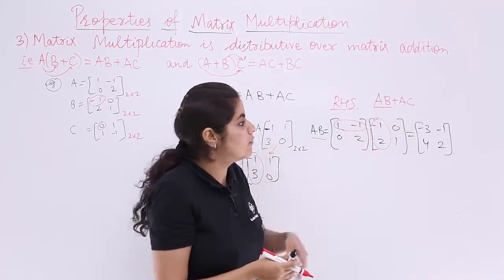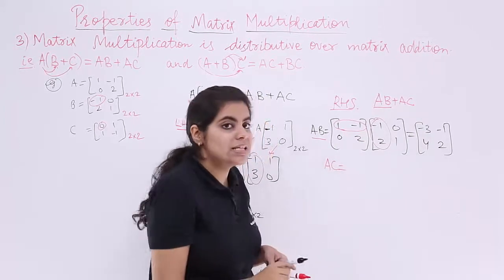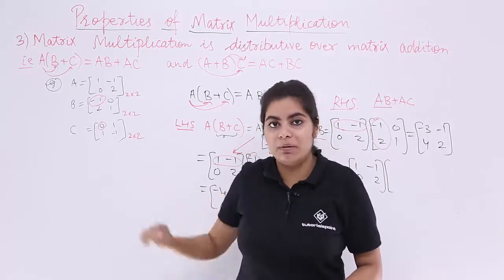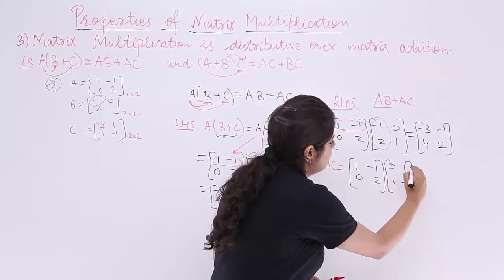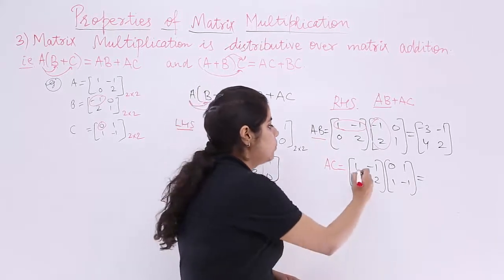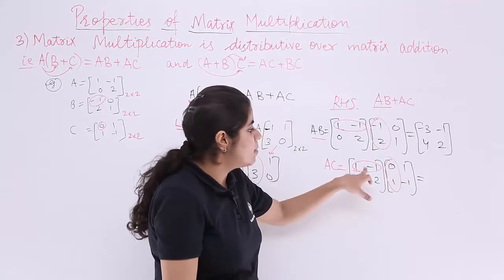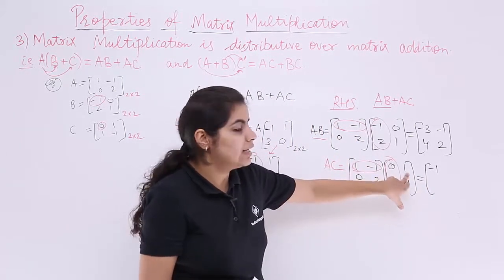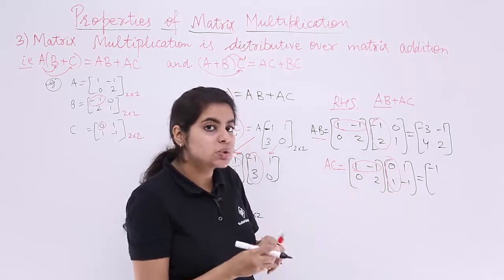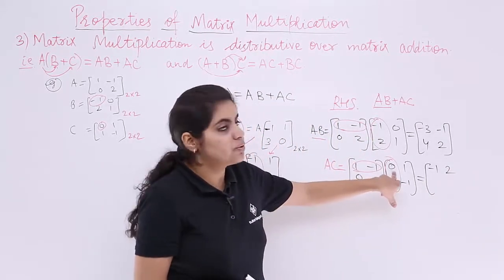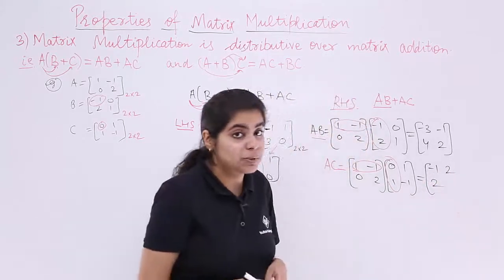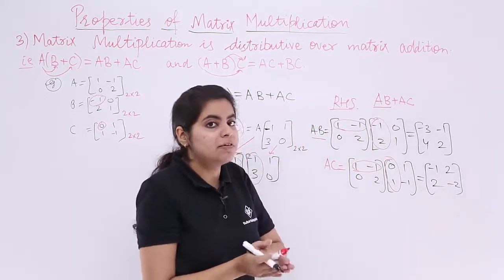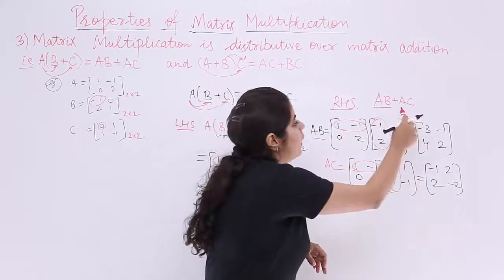Now computing AC: A is [1, -1; 0, 2] and C is [0, 1; 1, -1]. First row, first column: 1×0 = 0, (-1)×1 = -1, so -1. First row, second column: 1×1 = 1, (-1)×(-1) = +1, so 2. Second row, first column: 0×0 = 0, 2×1 = 2, so 2. Second row, second column: 0×1 = 0, 2×(-1) = -2, so -2. AC = [-1, 2; 2, -2].